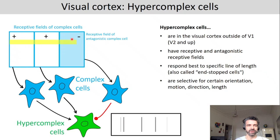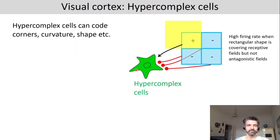But if the line is a bit too long, and it is reaching into the receptive field of an antagonistic complex cell — antagonistic because it inhibits the hypercomplex cell — then we also have some inhibition coming from this complex cell, which reduces the firing rate of the hypercomplex cell. There are even more specific hypercomplex cells that respond particularly to features like curvature or edges, so these features can also be discriminated by hypercomplex cells.